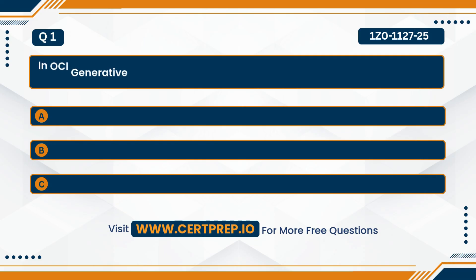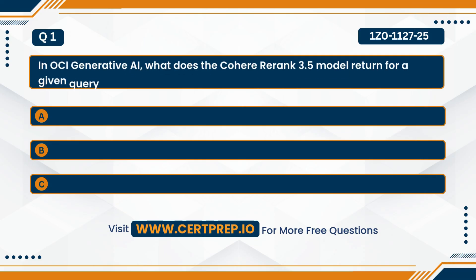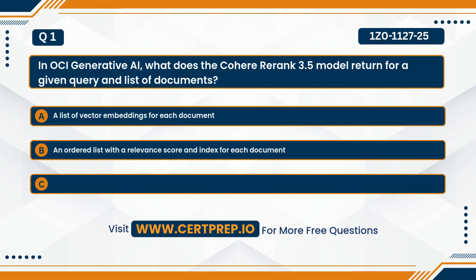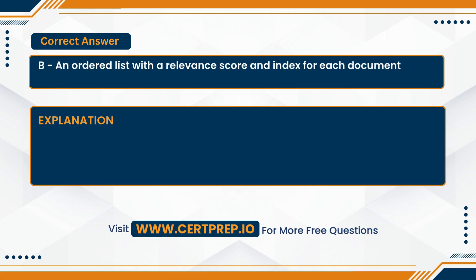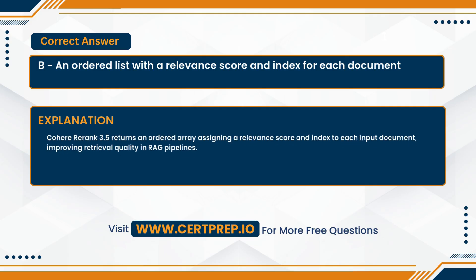Question one. In OCI Generative AI, what does the Cohere Rerank 3.5 model return for a given query and list of documents? A. A list of vector embeddings for each document. B. An ordered list with a relevance score and index for each document. Or C. A single abstractive summary of all documents. The correct answer is B — an ordered list with a relevance score and index for each document. Cohere Rerank 3.5 returns an ordered array assigning a relevance score and index to each input document, improving retrieval quality in RAG pipelines.